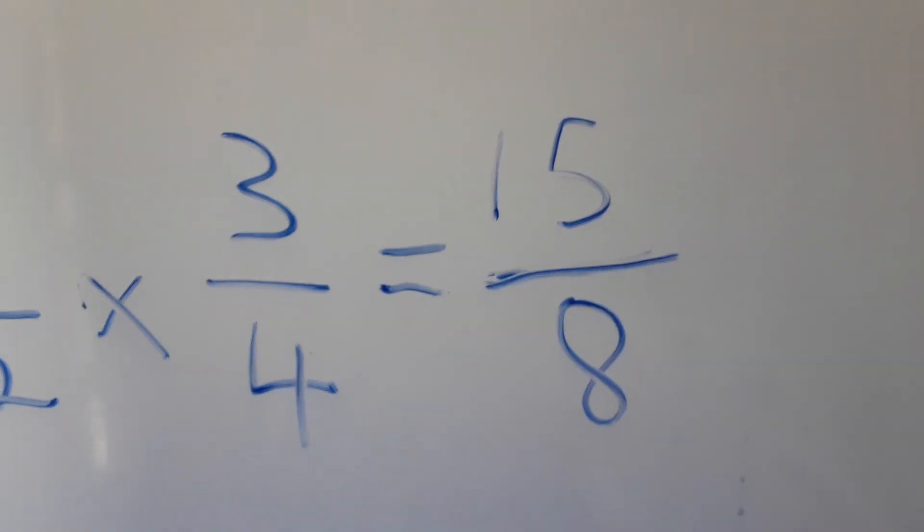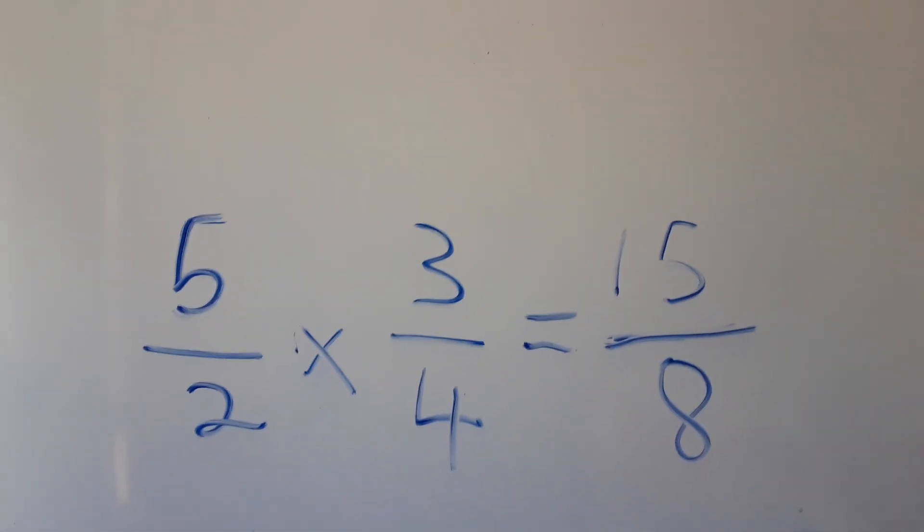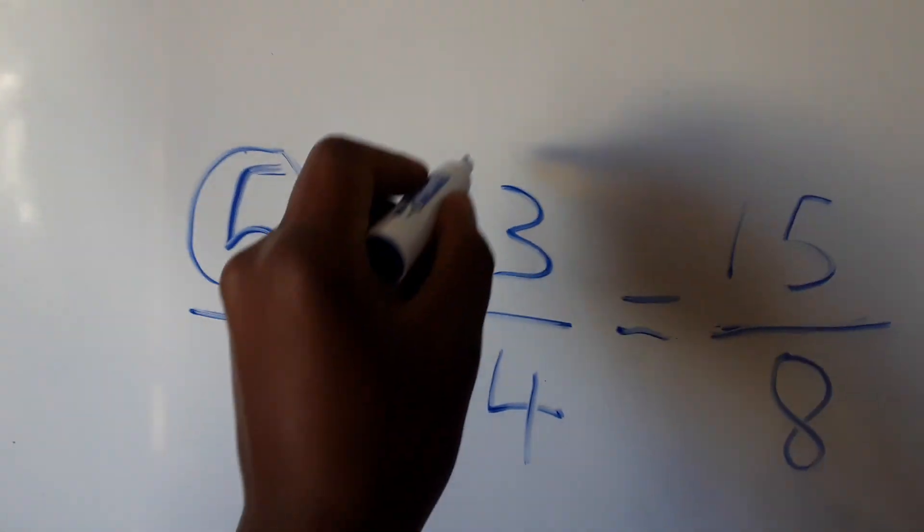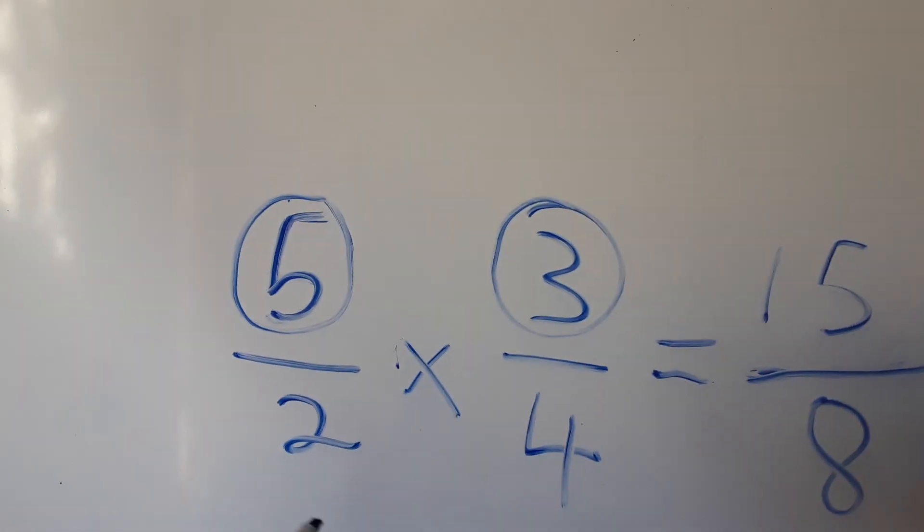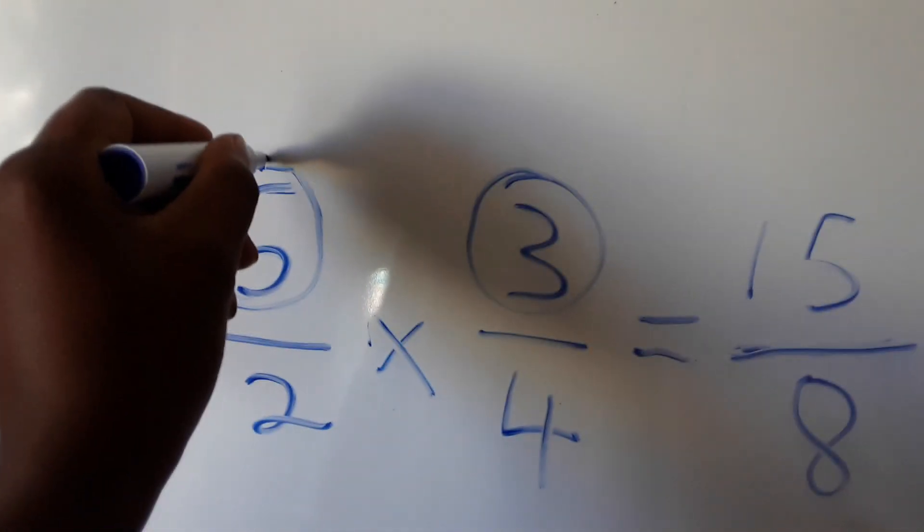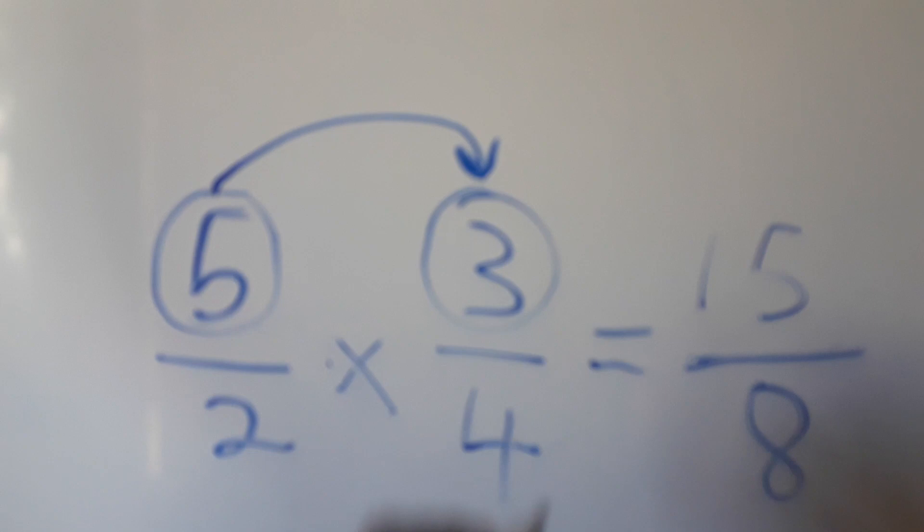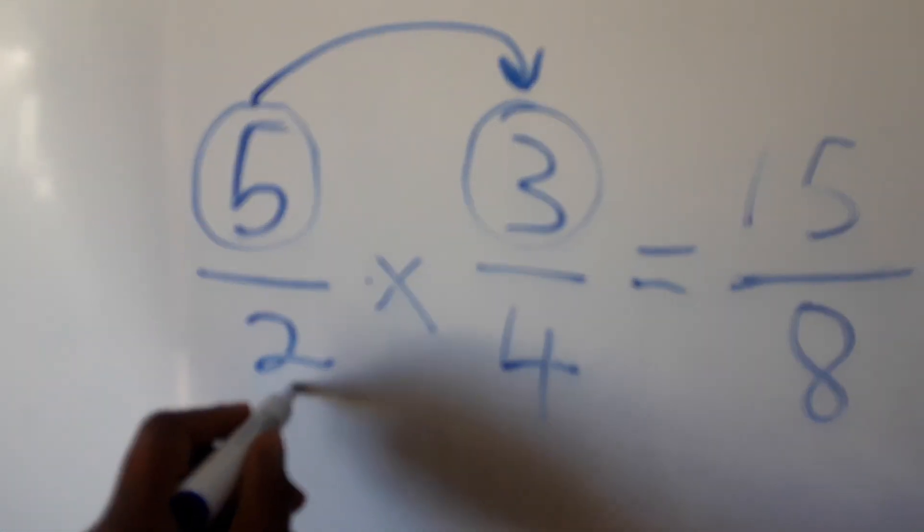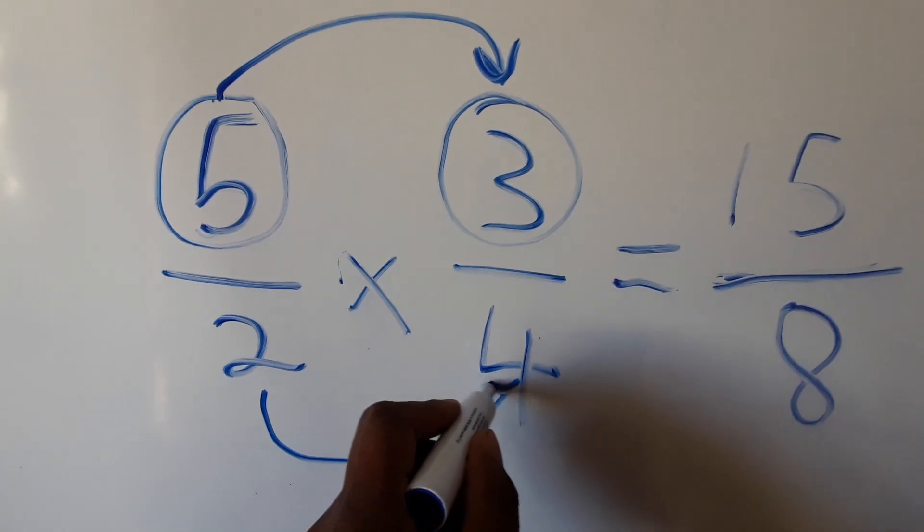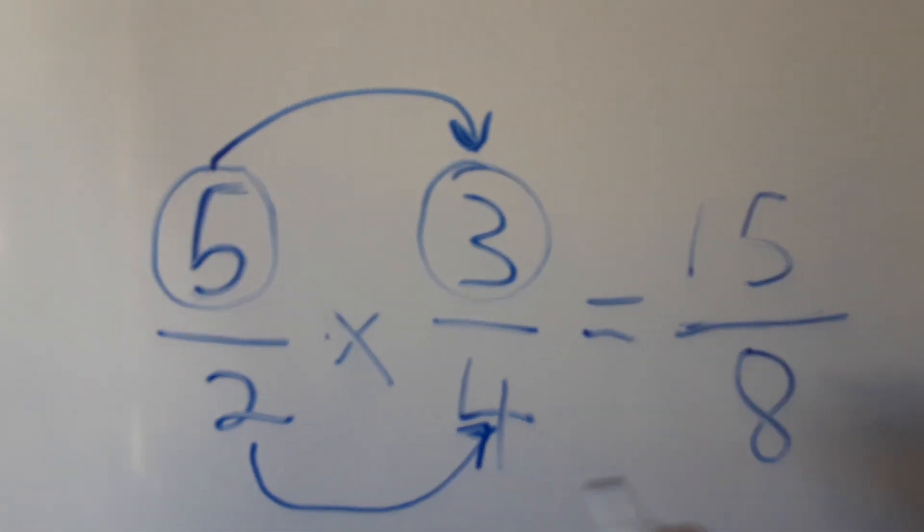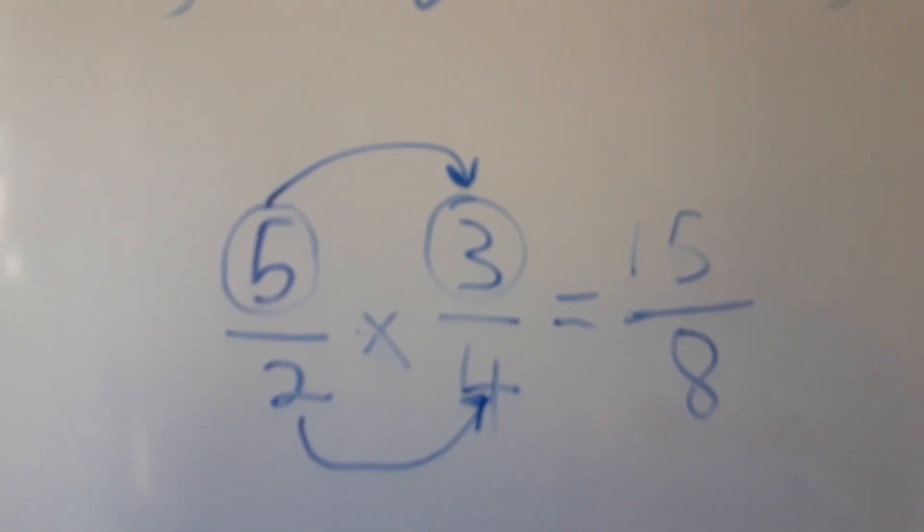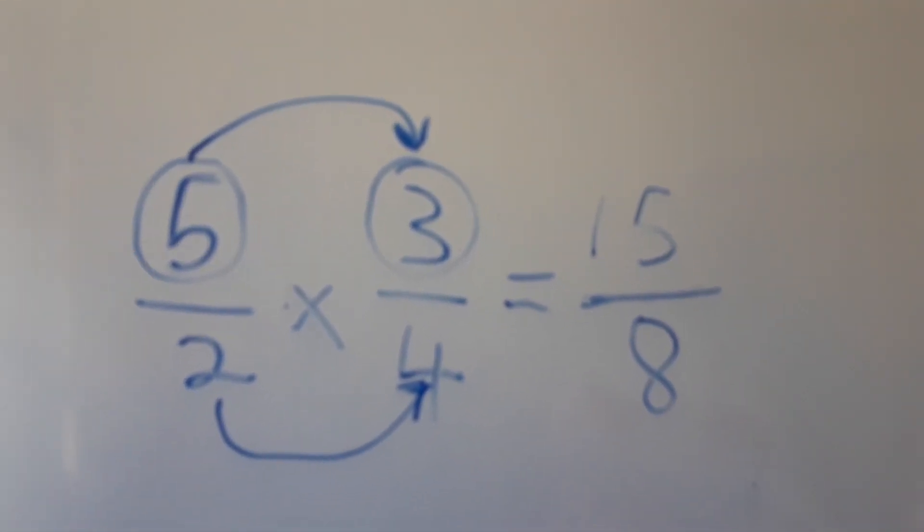5 times 3 is 15, and 2 times 4 is 8. So 5 over 2 times 3 over 4 equals 15 over 8. This is how we multiply fractions.